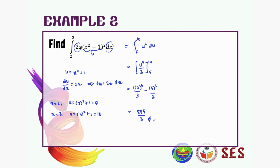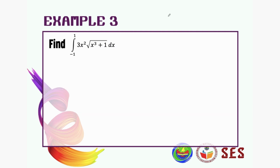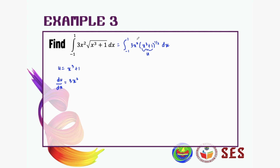Let's try the last example. We have the integral of 3x squared times the square root of x cubed plus 1, which can also be written as the integral from negative 1 to 1 of 3x squared times (x cubed plus 1) to the power of one half dx. This function has power one half, so this will be our u. So u equals x cubed plus 1, and differentiating gives 3x squared, meaning du equals 3x squared dx.